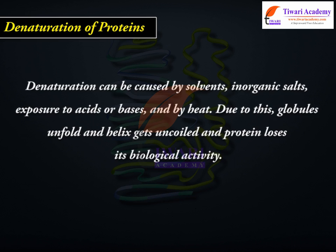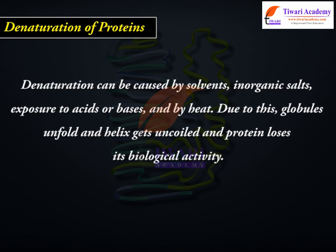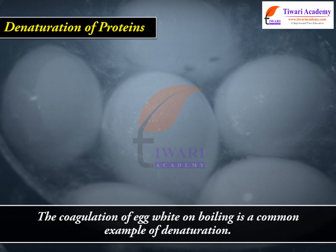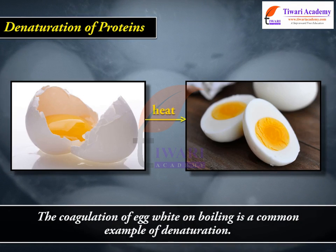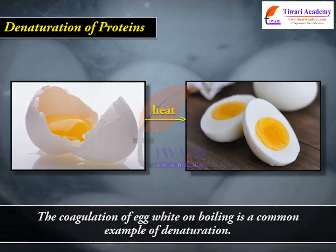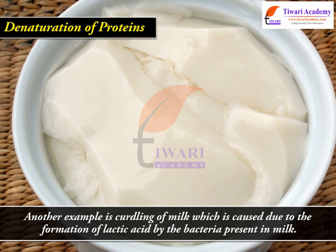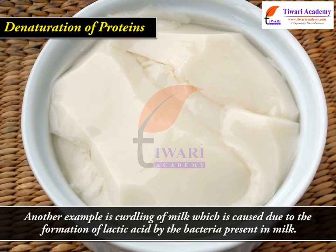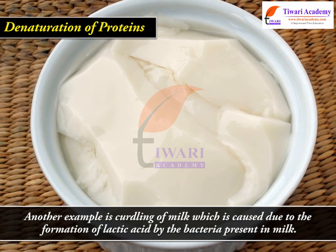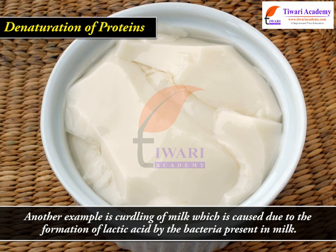Due to this, globules unfold and the helix gets uncoiled, and the protein loses its biological activity. The coagulation of egg white on boiling is a common example of denaturation. Another example is curdling of milk, which is caused due to the formation of lactic acid by the bacteria present in milk.